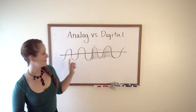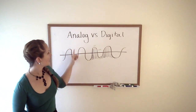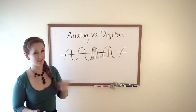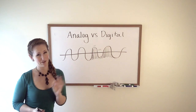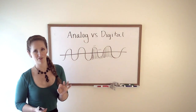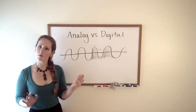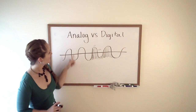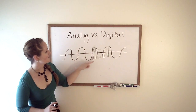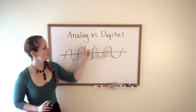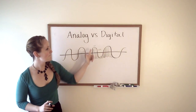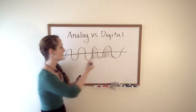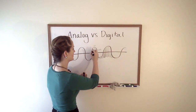An analog sound wave would look something like this. This would be like a perfect sine wave, which would not really ever be heard in nature, but that's beside the point. This analog sound wave — the computer takes that and measures at all these different points.